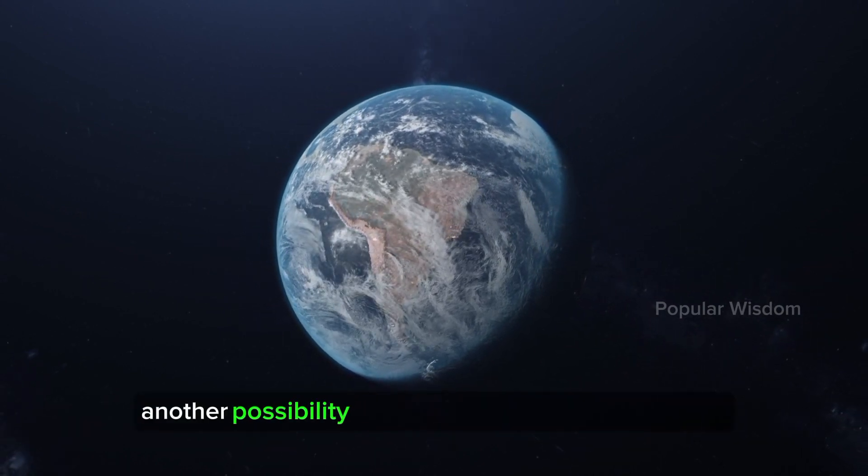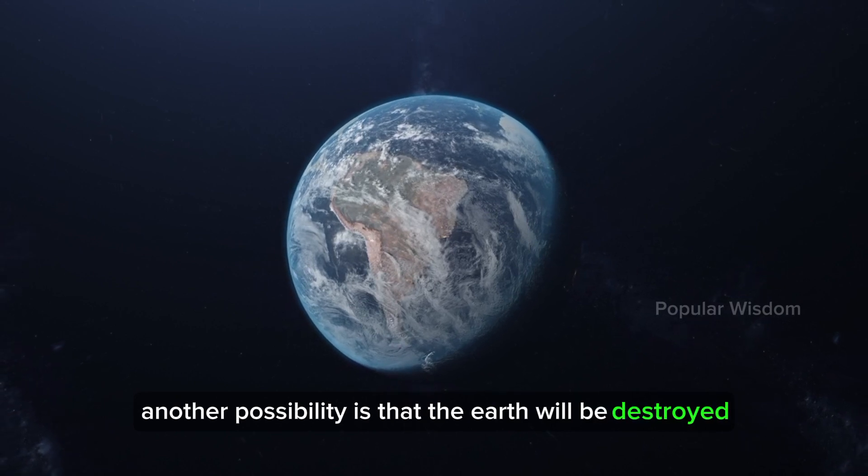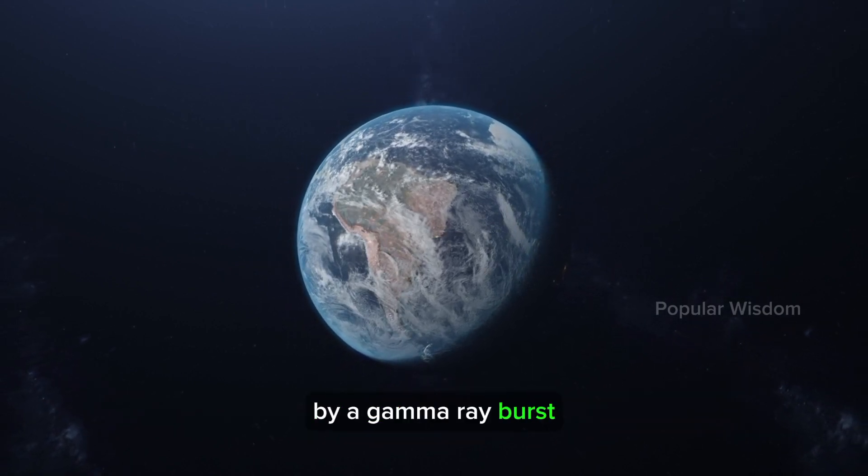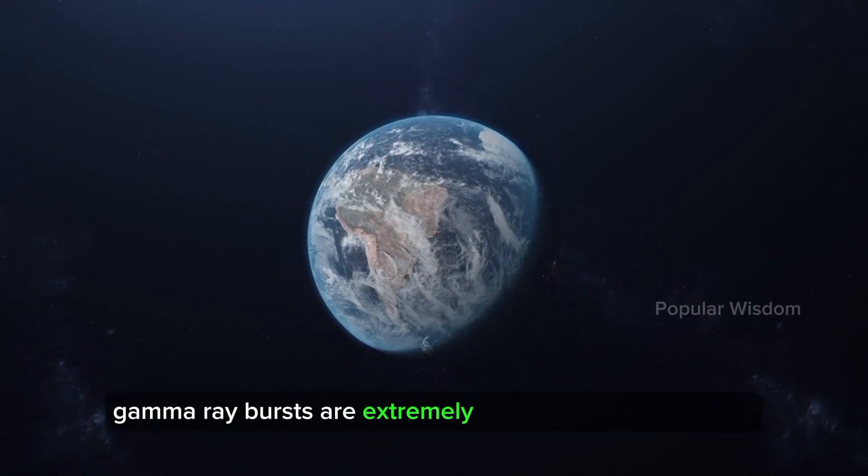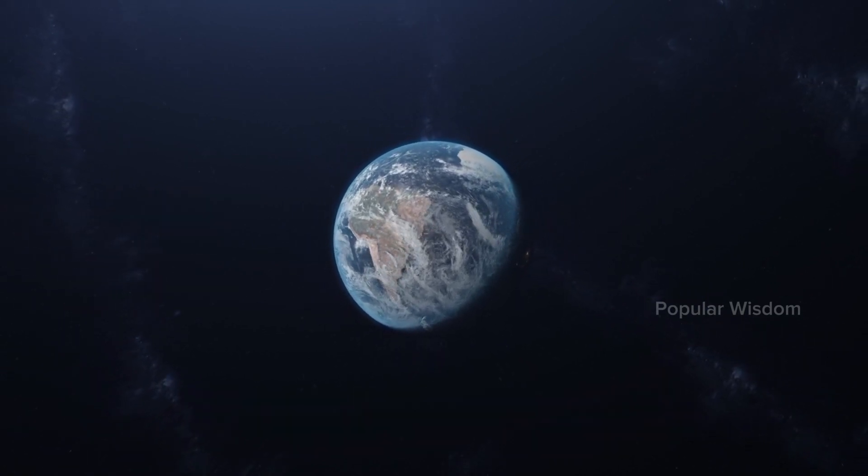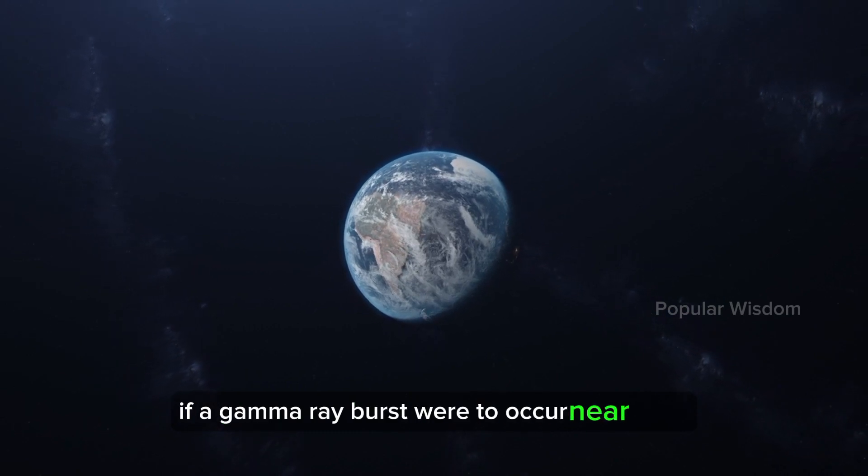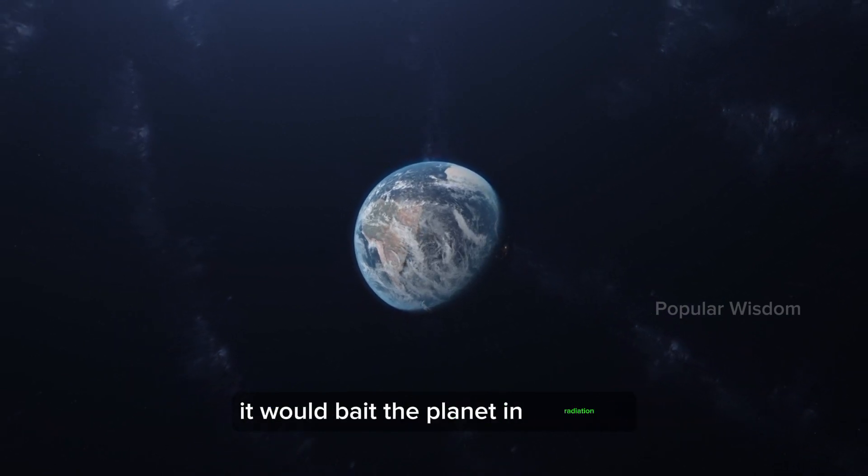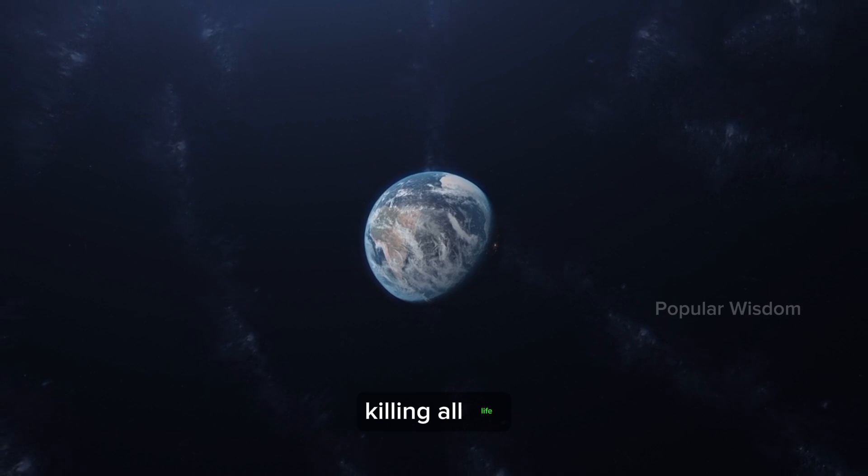Another possibility is that the Earth will be destroyed by a gamma-ray burst. Gamma-ray bursts are extremely powerful explosions that occur at the end of the lives of massive stars. If a gamma-ray burst were to occur near Earth, it would bathe the planet in radiation, killing all life.